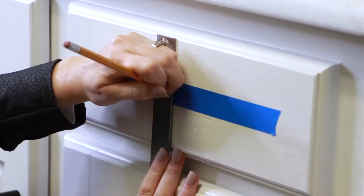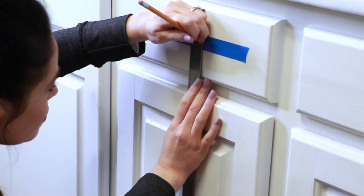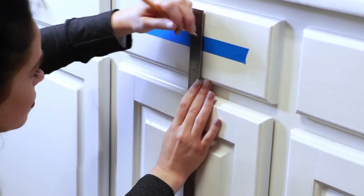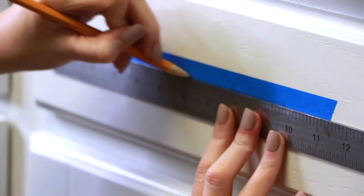First, use a ruler or tape measure to find the vertical center of your drawer front. Mark the vertical center in two spots on the tape. Use a ruler or straight edge to draw a line connecting the two marks.